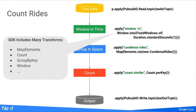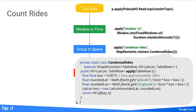We use transforms such as windowing, mapping, and count — these are built into the Dataflow SDK, requiring no additional work other than invoking them. Other transforms, such as this condensed write, can be written by you. The condensed write transform groups together points that occurred within 100 meters of each other, and runs in parallel over your data in a streaming fashion.